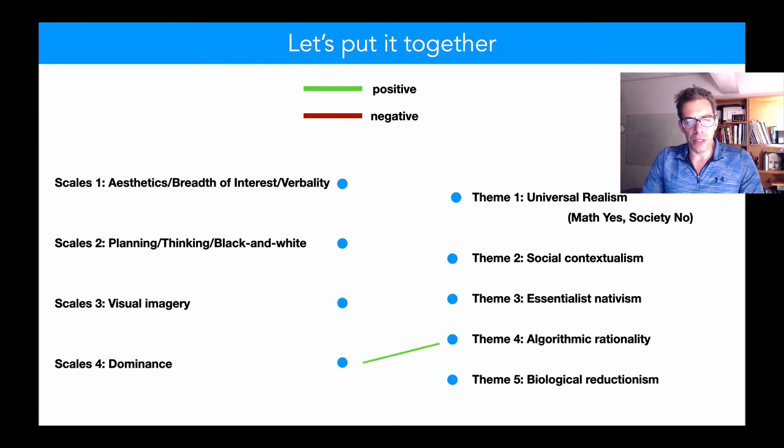And then there is finally a weak association between dominance and the kind of computer is a good model of the brain, homo economicus rationalism factor.